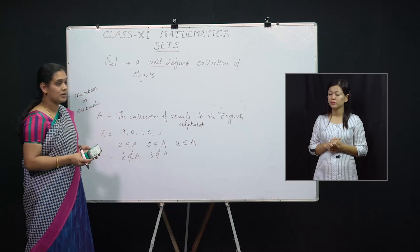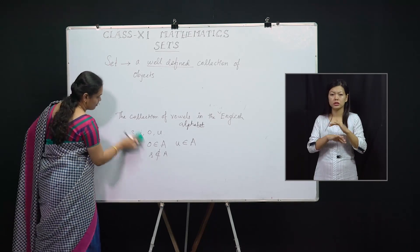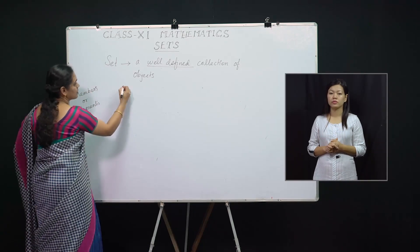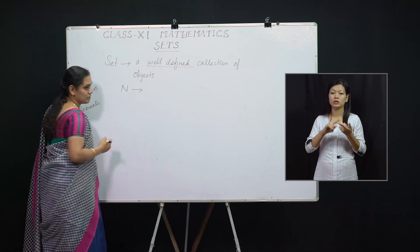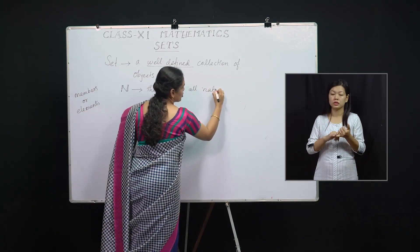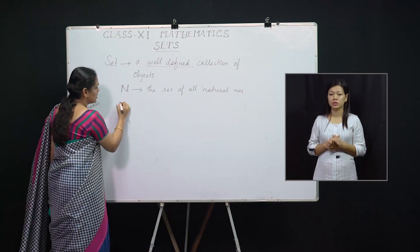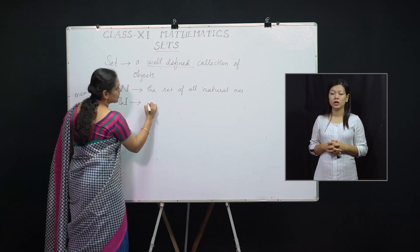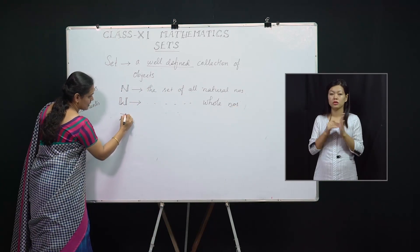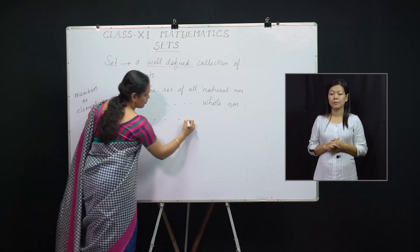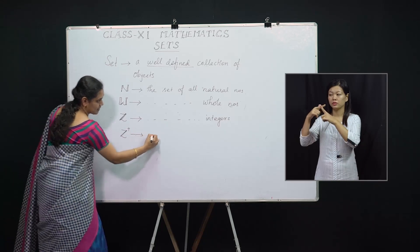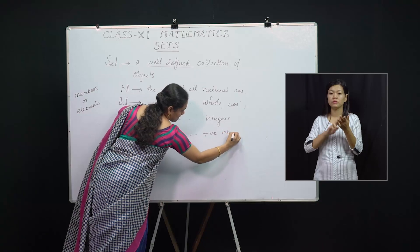In mathematics, we come across a few sets which are very popular and will be used throughout this text. N represents the set of all natural numbers. W is the set of all whole numbers. Z or Z represents the set of all integers. Z plus is the set of all positive integers.